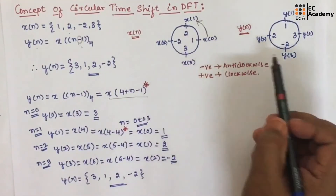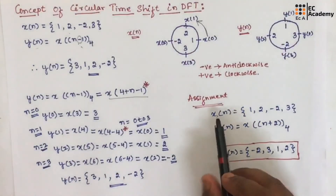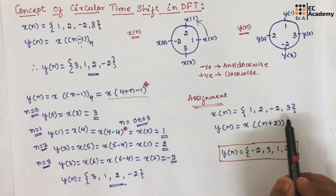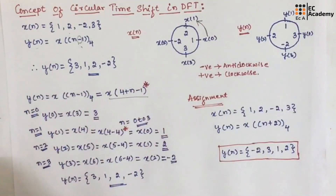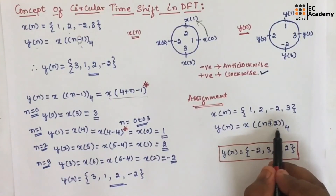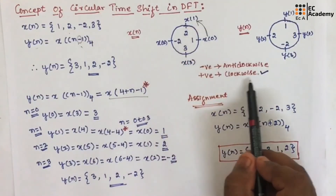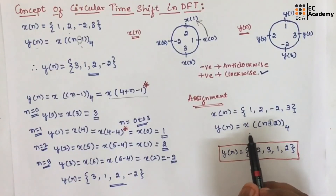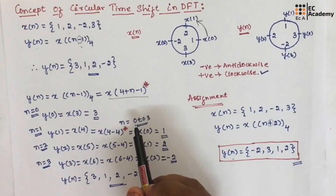These are the two methods. You can use the unit circle method or alternatively use the algebraic method to find the circular shift of the given sequence. For an assignment, take the same sequence for x of n and find the new sequence which is the circular shift given as x of n plus 2. Since it is a positive sign, you need to rotate the unit circle of x of n in the clockwise direction by 2 steps. This is the concept of circular time shift in DFT. Hope you have understood the concept. Thank you.